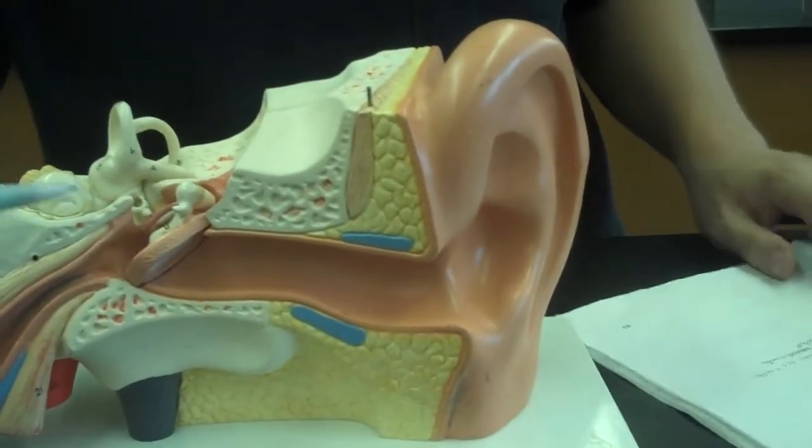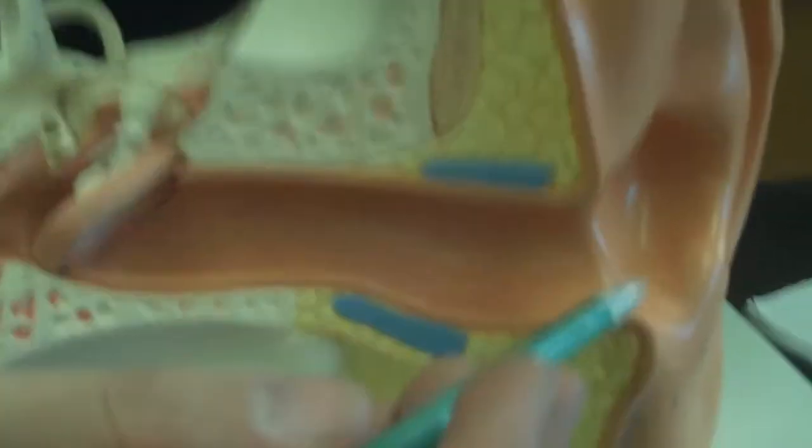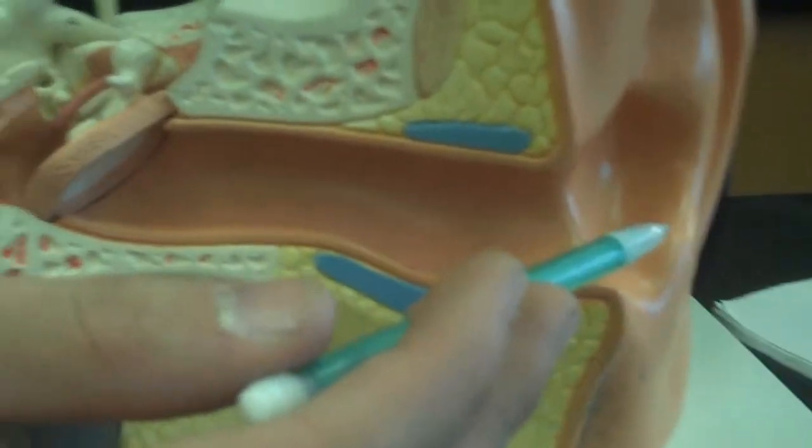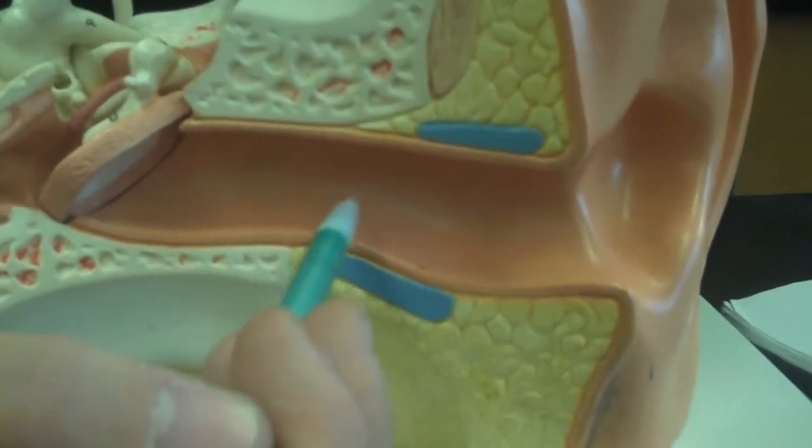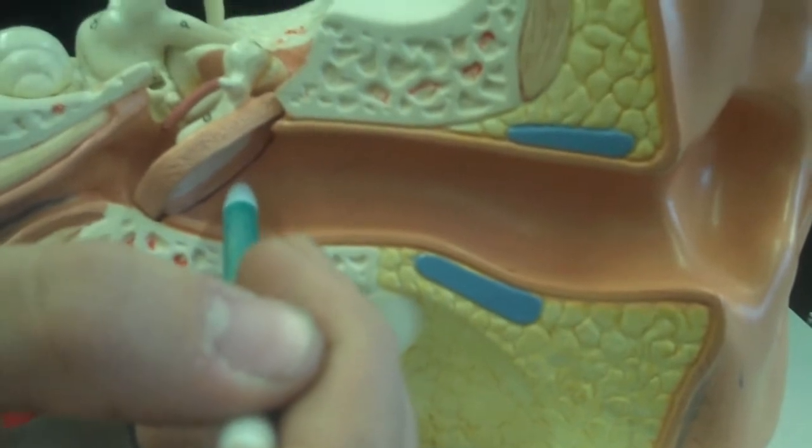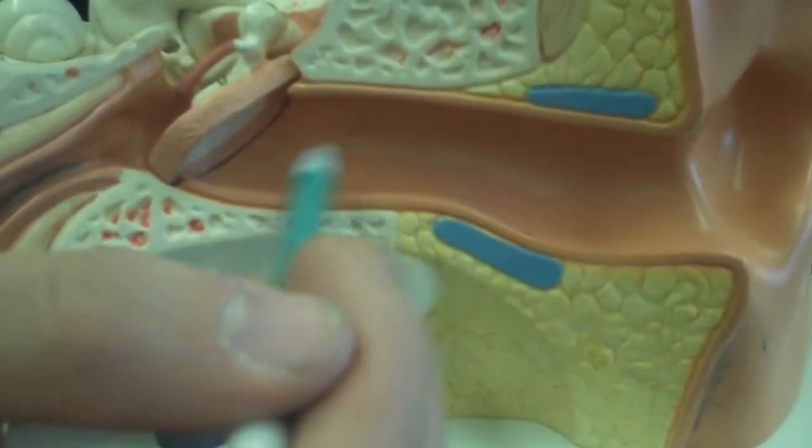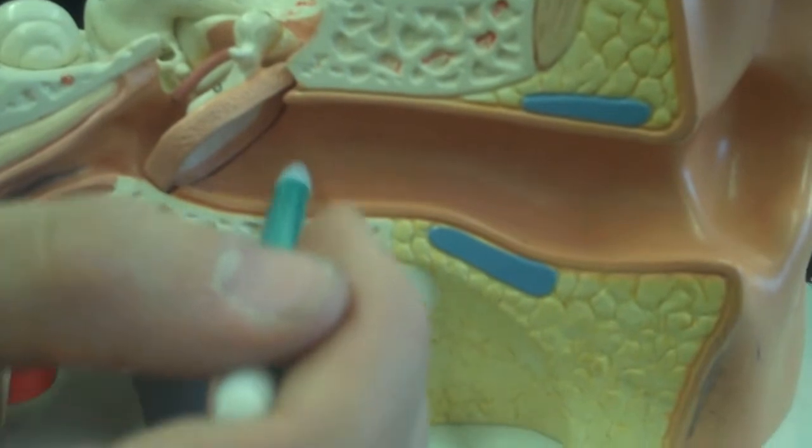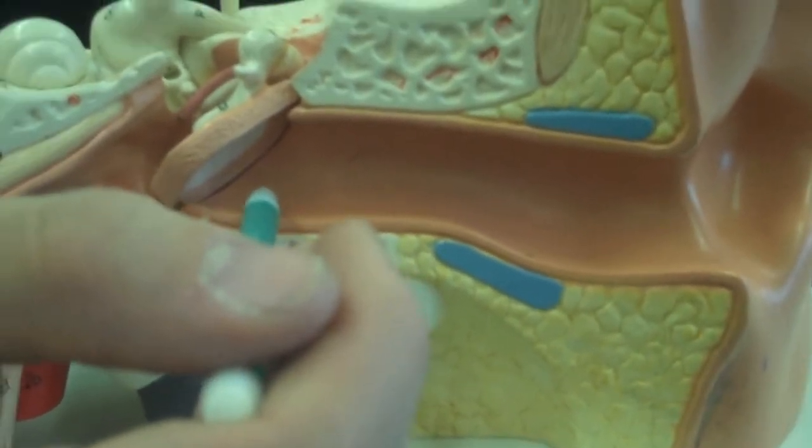Next we have the external auditory canal. The external auditory canal comes from the outside world all the way in here until it hits the tympanic membrane. So this whole region that brings in sound is the external auditory canal.